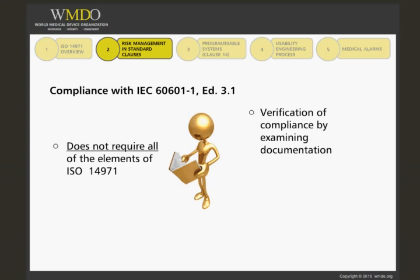The verification of compliance with the risk management requirements, as outlined in ISO 14971, is achieved by examining the manufacturer's documentation required by that standard and an assessment of the processes cited in the standard. In practice, a manufacturer must provide all related quality system policies, procedures, work instructions, and forms for review by an inspector, who can then determine whether they cover all elements of ISO 14971 required by the IEC 60601-1 standard. So instead of conducting a traditional audit, a document review is conducted to verify that the requirements have been met.